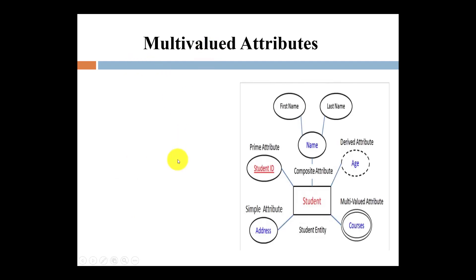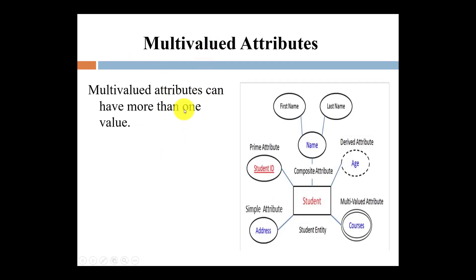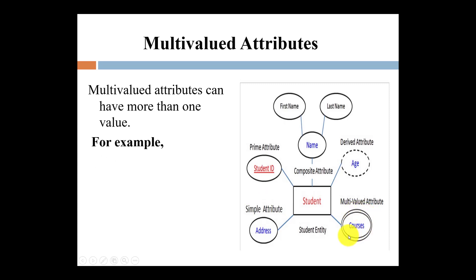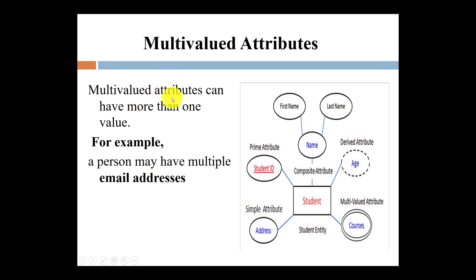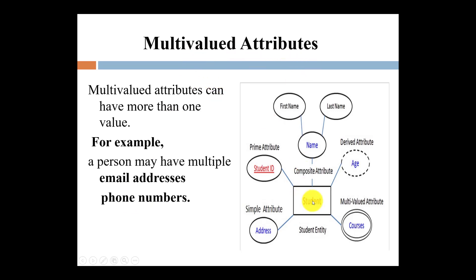Now what is a multi-value attribute? A multi-value attribute can hold more than one value. For example, the attribute 'Course' — a student can be enrolled in a number of courses, making it a multi-value attribute. Another example is email address — one person can have multiple email addresses, or one person can have two or three phone numbers. Multi-value attributes are represented by a double oval shape in the ER diagram.